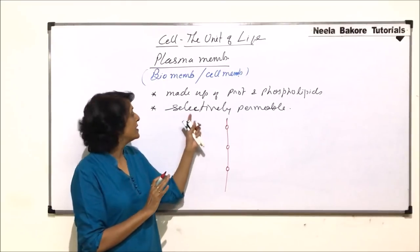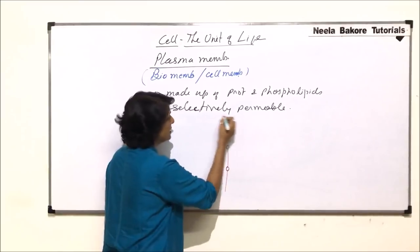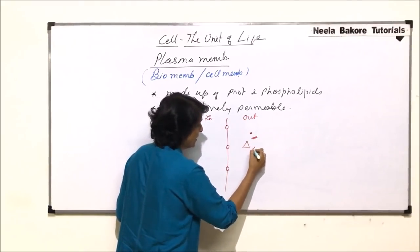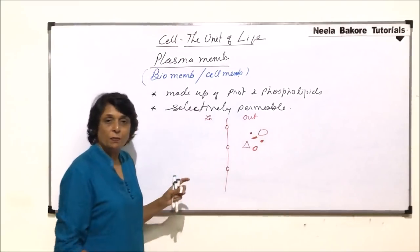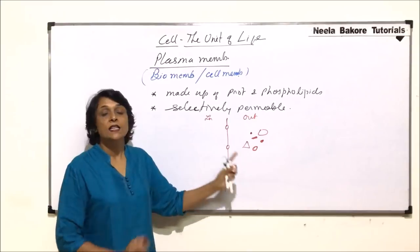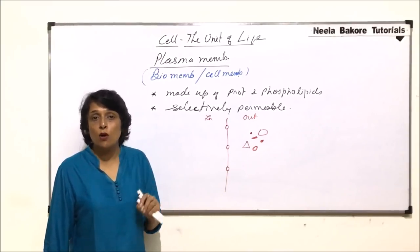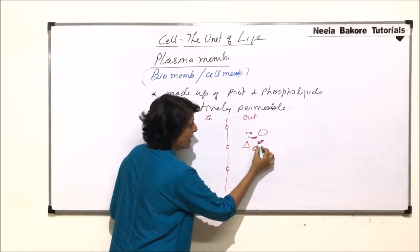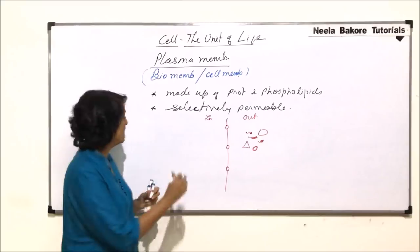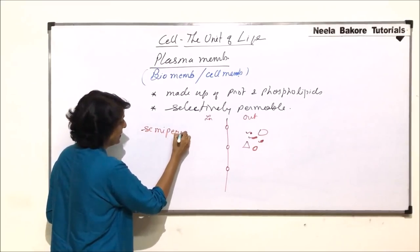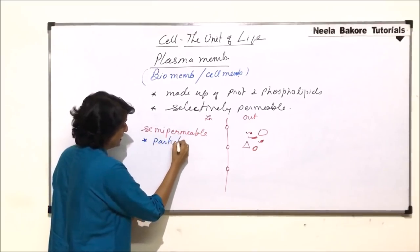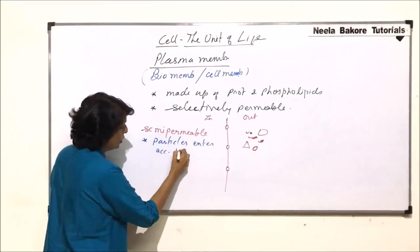To understand what is meant by selectively permeable membrane, let us say this is the membrane — this is inside of the cell, and this is outside. If outside has some particles which are to be taken in, which particle can go in? If the membrane is semi-permeable, then entry of the particle depends according to the pore size. That means the smaller particles which can cross this pore they can go in. In that case we will call the membrane semi-permeable — a term used where particles enter according to the pore size.